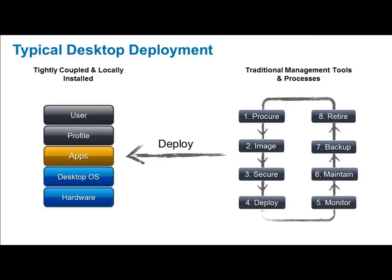When we deploy the desktop out to the end user, we have a tightly coupled and locally installed image. That means we have the hardware, the desktop operating system, the applications, the profile, and the user all tightly tied together. The desktop OS image is designed to run on that piece of hardware. The apps are installed into the desktop OS and tightly coupled into it, which means any changes we make to the OS or apps must not affect any other applications. For example, if we make a change to application A, we have to make sure it doesn't affect applications B, C, D, or E. That takes a lot of time, process, and therefore costs a lot of money for organizations.